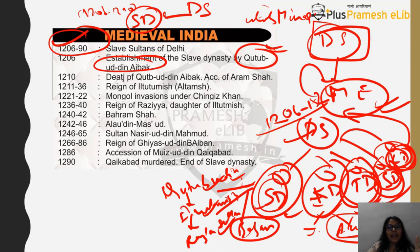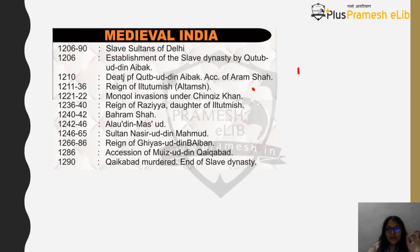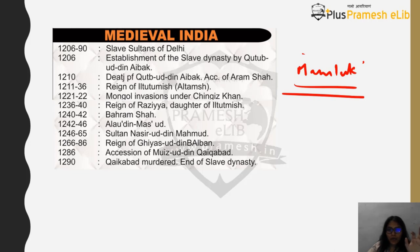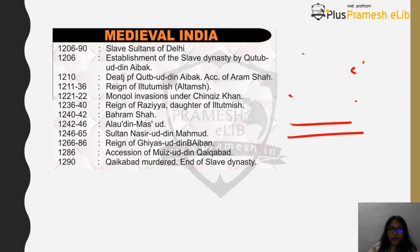The Slave Dynasty starts in 1206 with Qutbuddin Aibak establishing it. Before moving forward, you should know that the Slave Dynasty is also called the Mamluk Dynasty — please write this down. It is also called the Qutbi Dynasty because it was established by Qutbuddin Aibak.